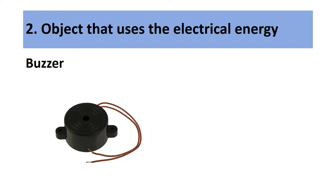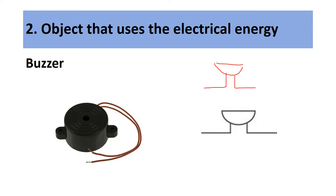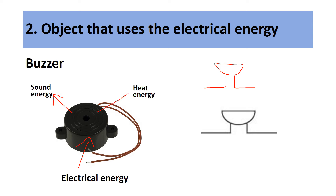Our next electrical component is a buzzer. To draw its symbol, you draw a half circle, then a full circle, with two wires coming out of the bottom. When an electrical buzzer is being used, electrical energy flows in and is transformed into sound energy, and some of it into heat energy.